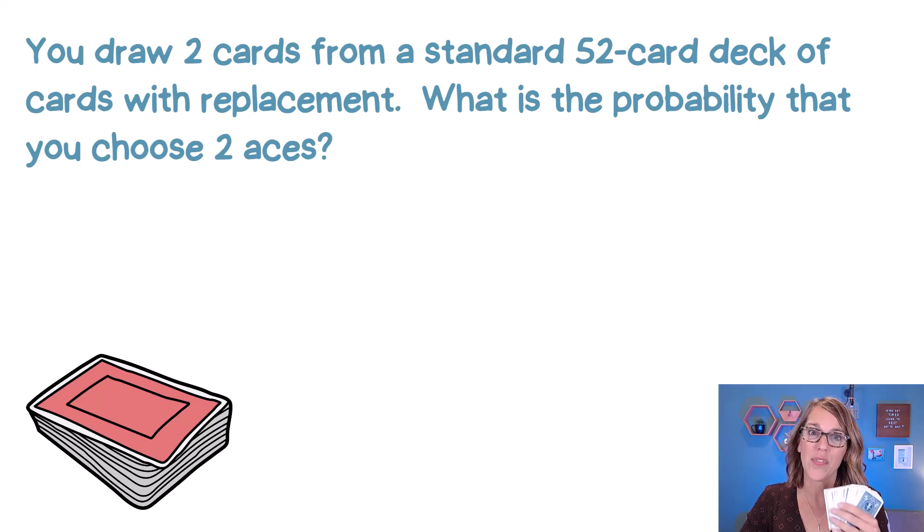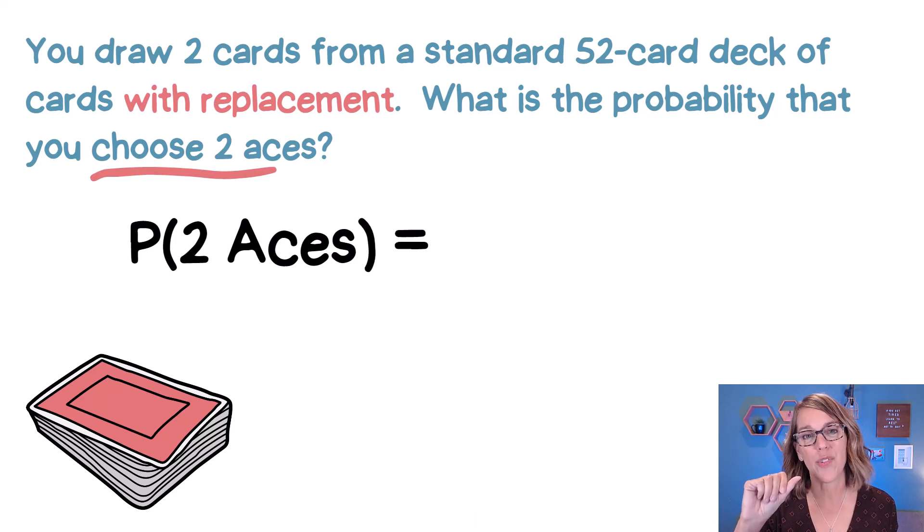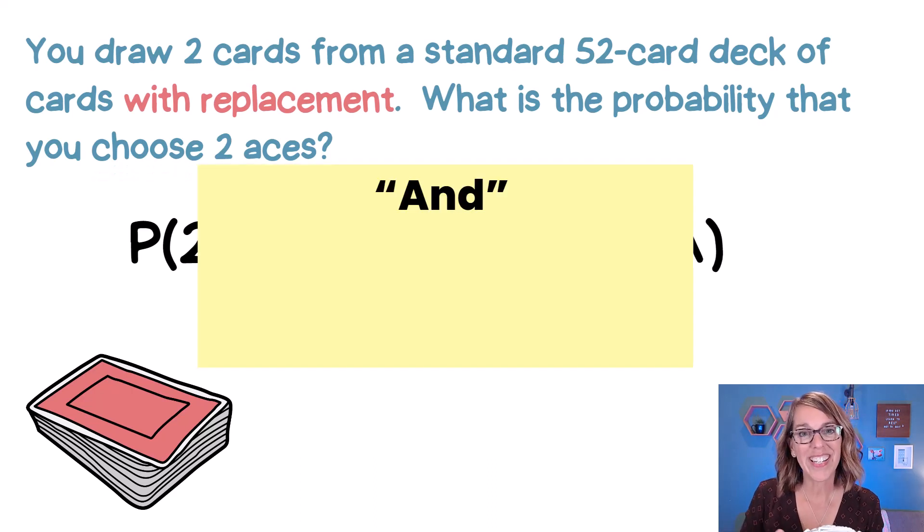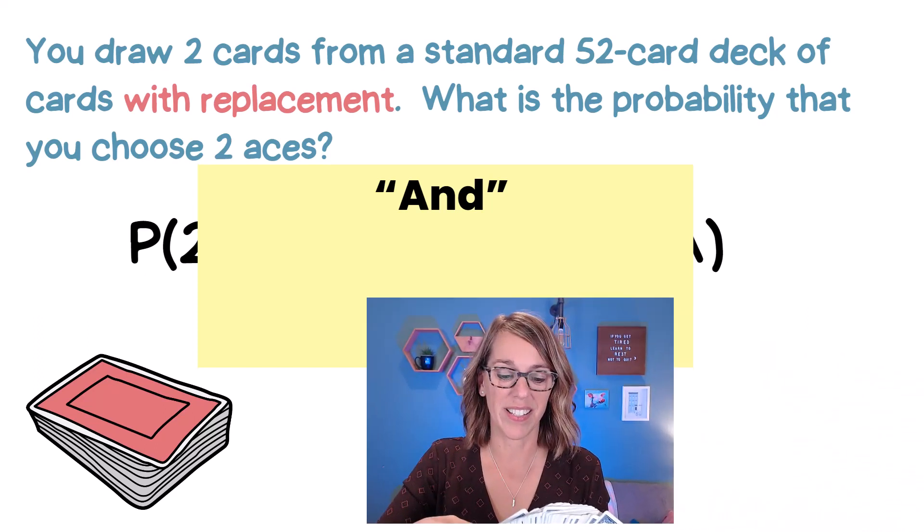We're going to draw two cards from a standard 52 card deck with replacement. We want to find the probability that they are both aces. So that probability translates into the probability of drawing an ace and an ace. So we're going to need a formula for and, but first we've got to decide what with replacement means.